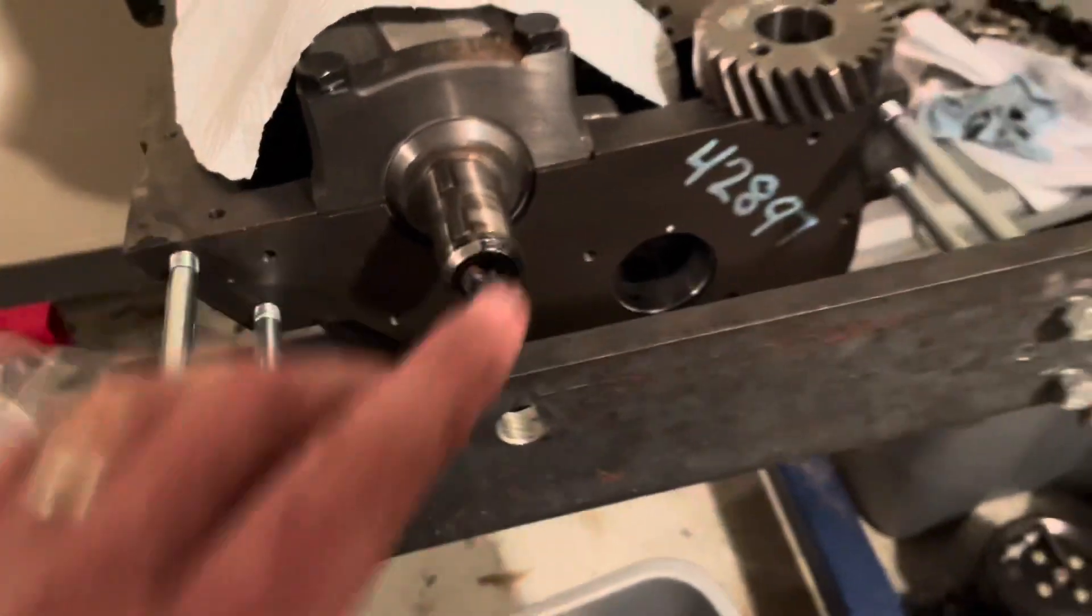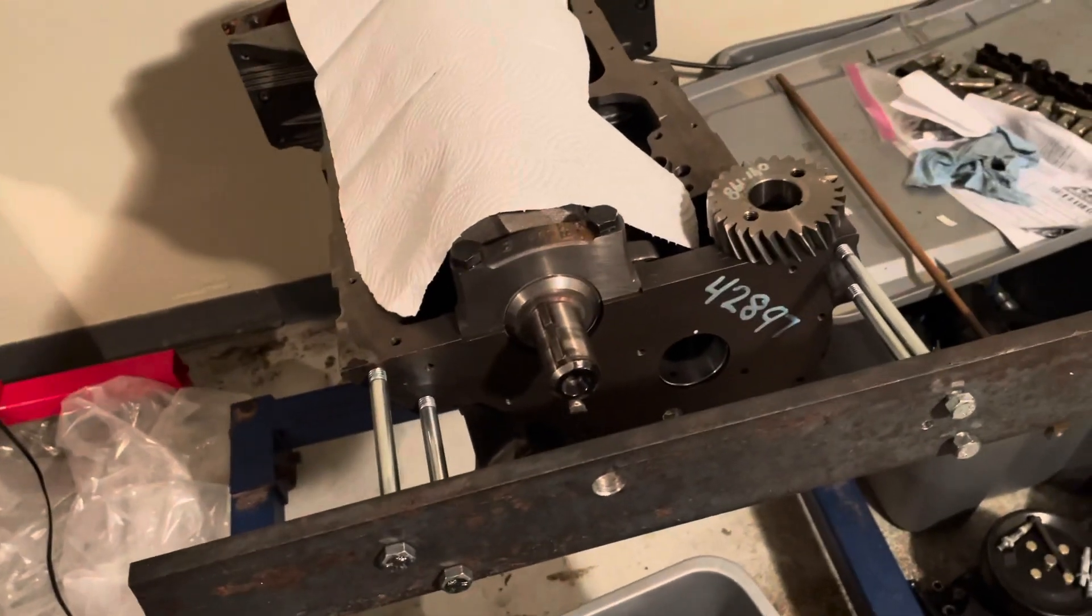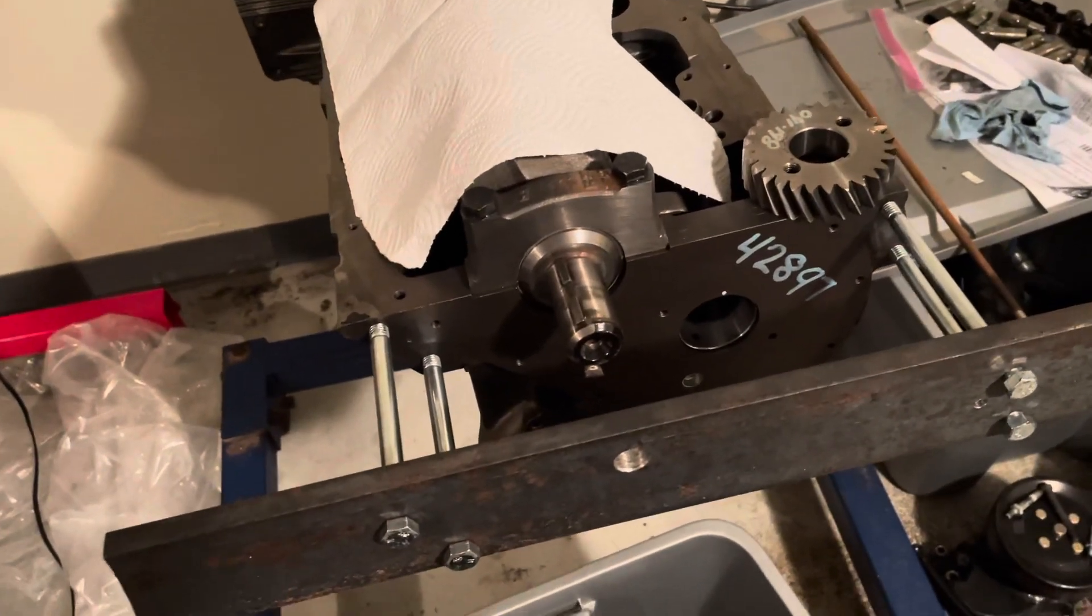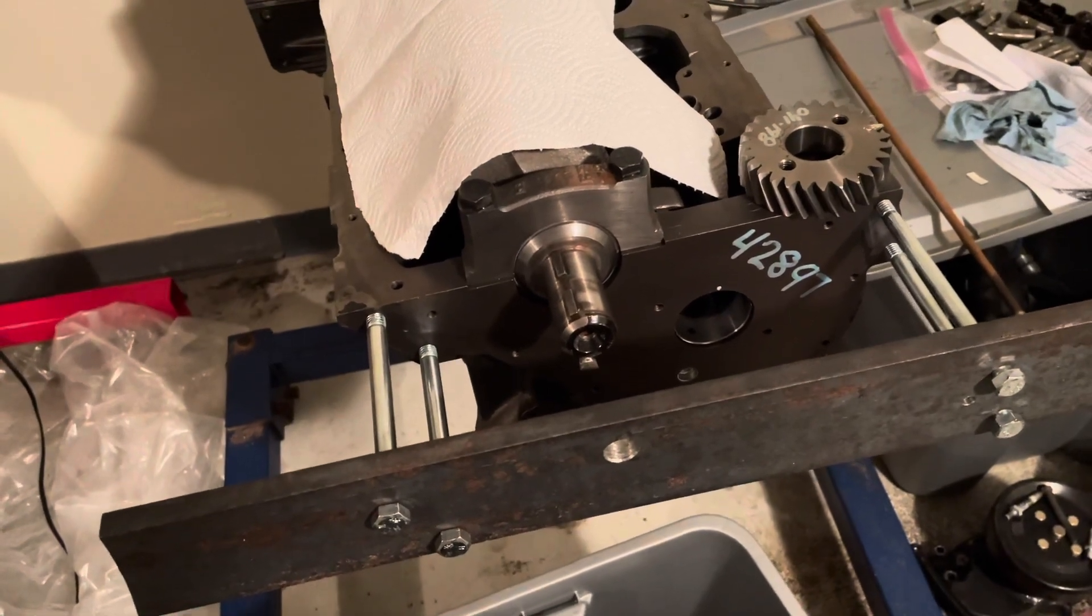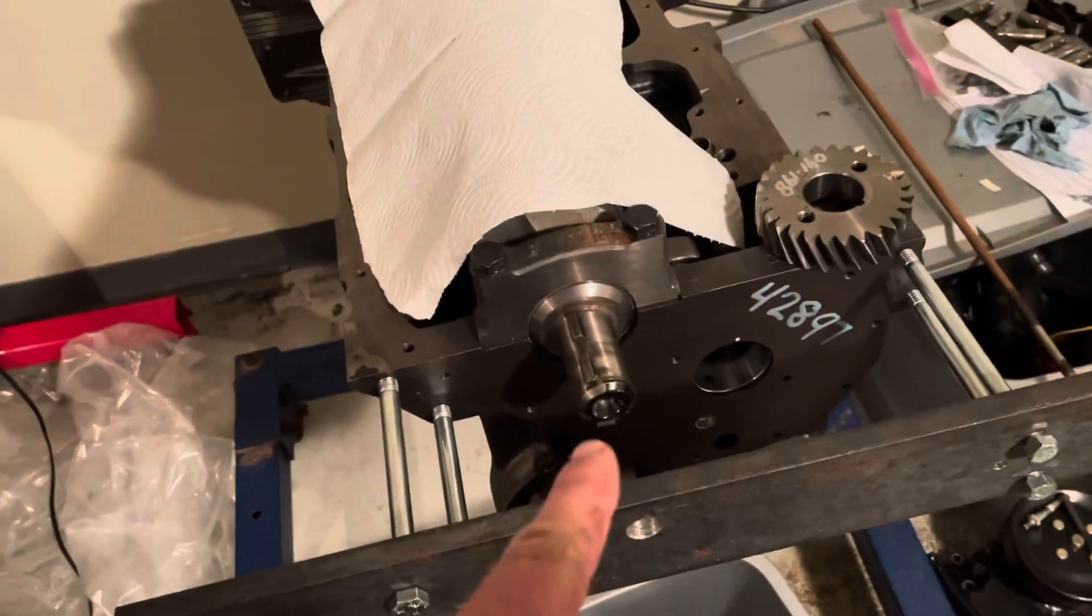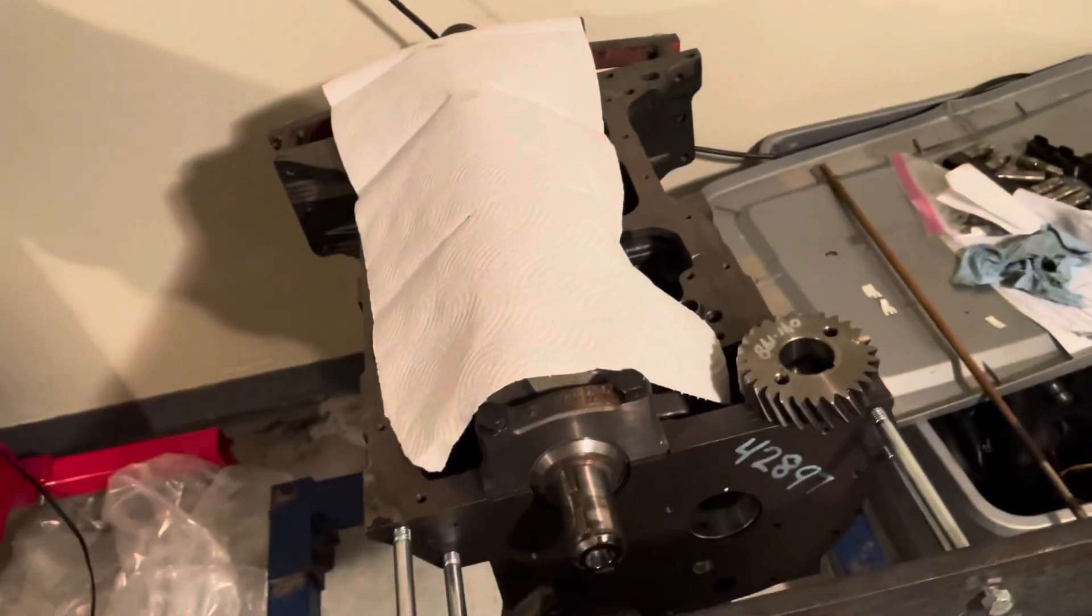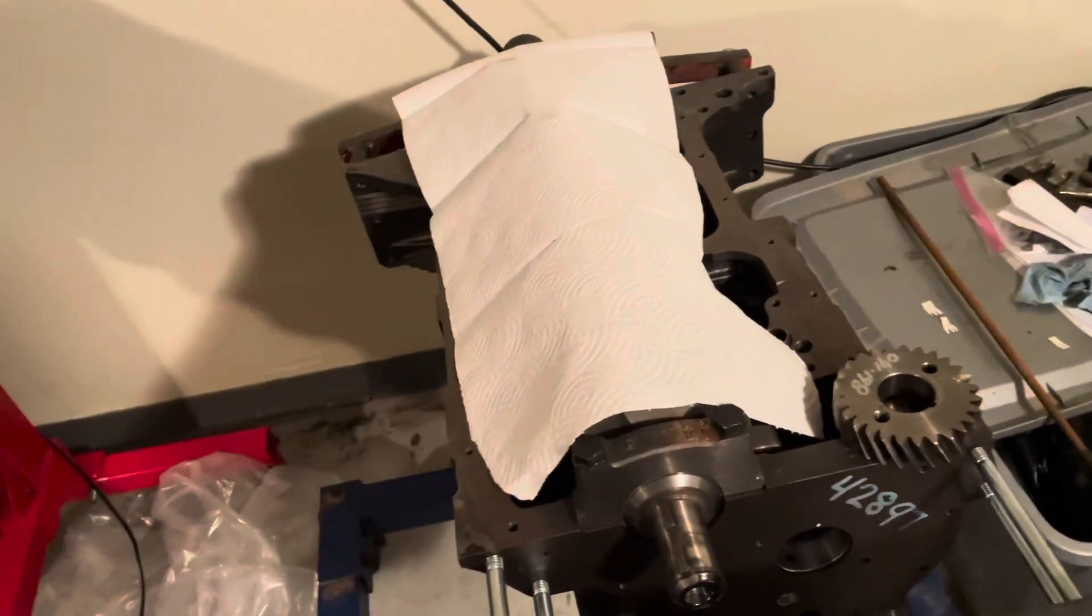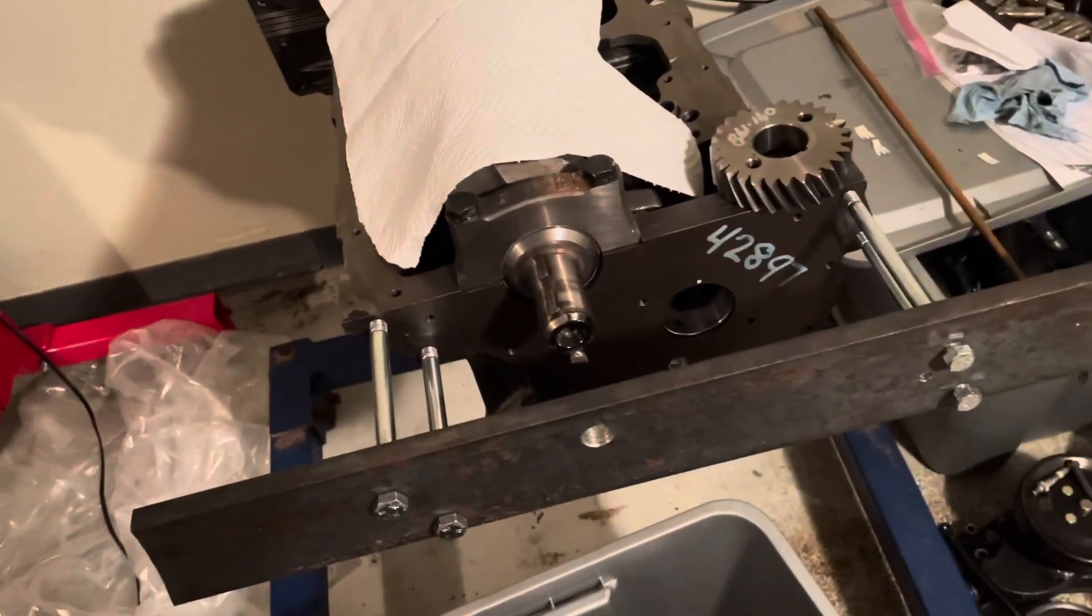I think I read on the internet that they hammer them on with a rubber hammer or something, but I just don't like hammering on engines because when you hammer on this crank you're putting all the force towards the back and it puts pressure on that thrust bearing in the back, and the bearing is a little bit soft, so I'd rather not do that.